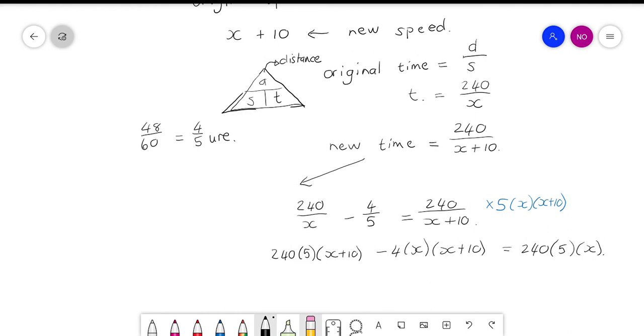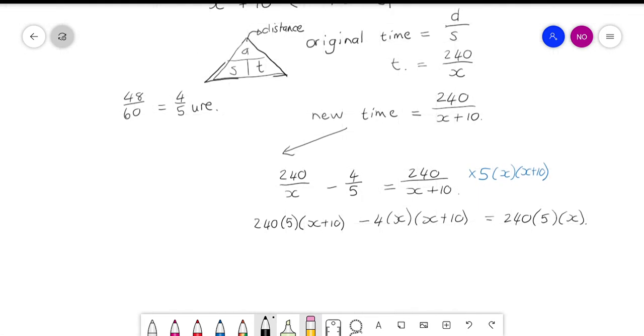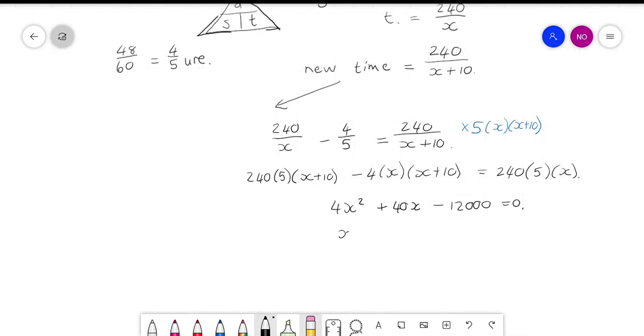And for this last one you will have the original 240 times 5 times x. So you'll have 4x squared plus 40x minus 12000 equals 0. And then you can divide by 4, so we have x squared plus 10x minus 3000 is equal to 0.